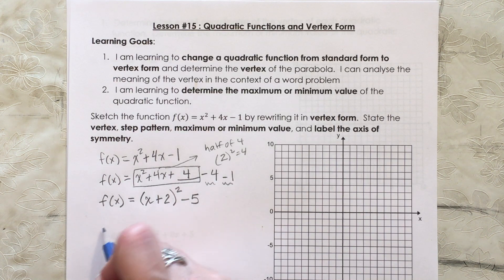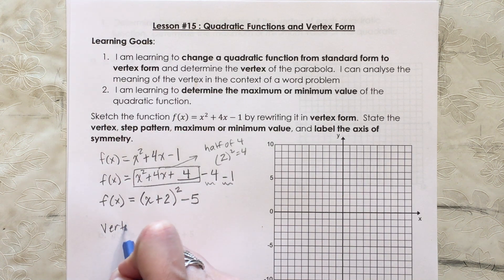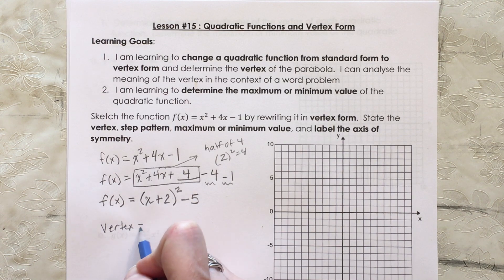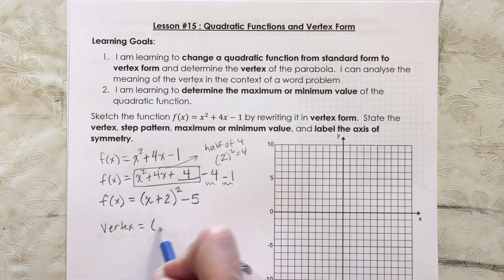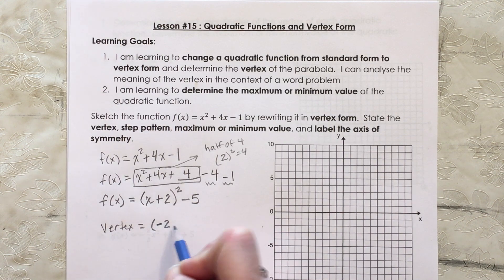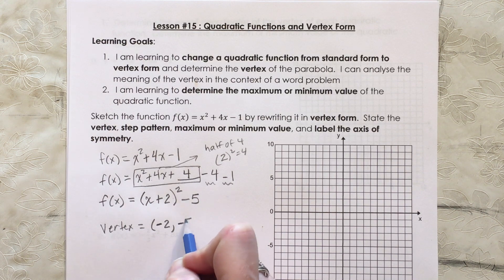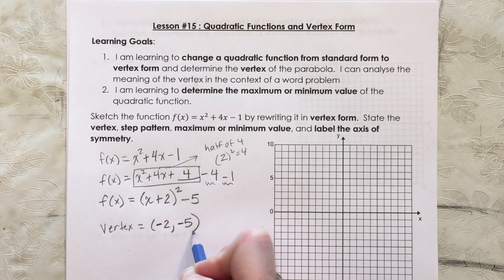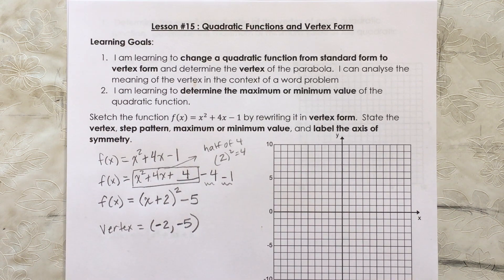Now it's in vertex form. The vertex is (-2, -5) — opposite sign for the x, same for the y value. So we can plot that on our graph.